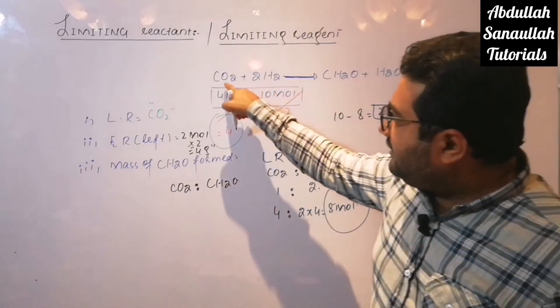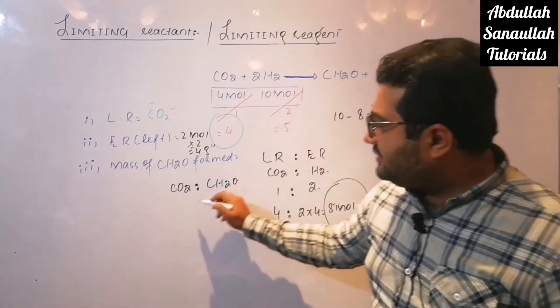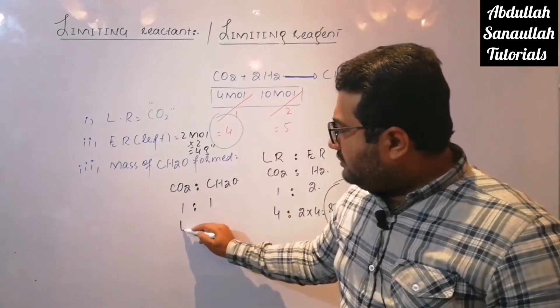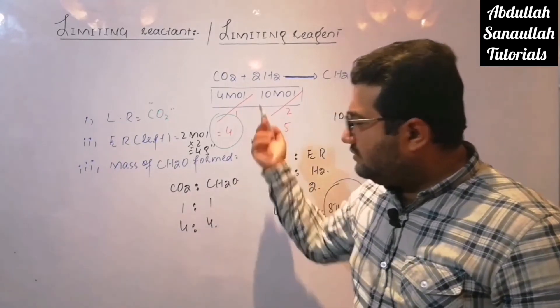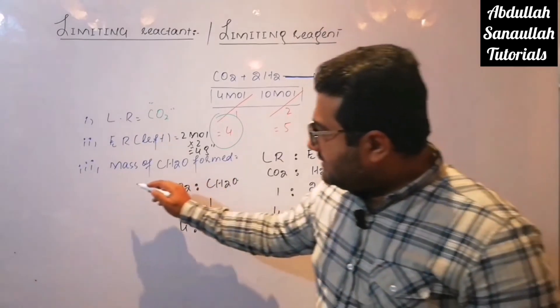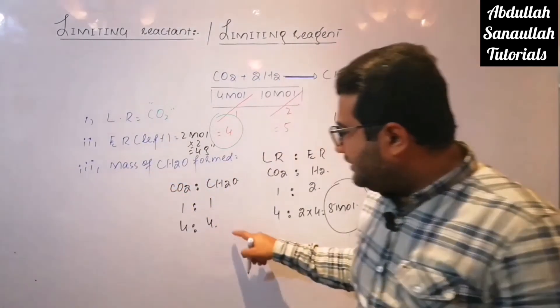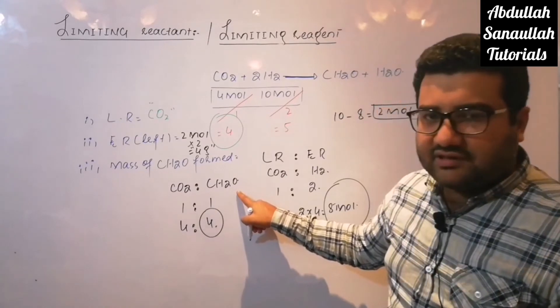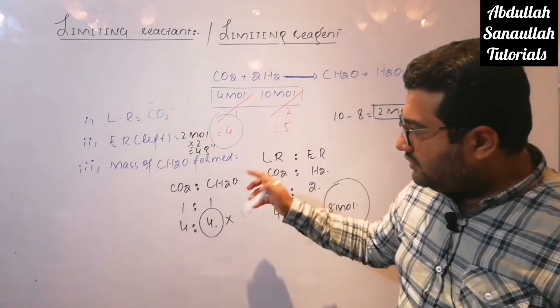According to the equation, we can see that one mole of CO2 produces one mole of CH2O and four moles will produce four moles. So the mass of CH2O produced, this is the number of moles of CH2O which are produced multiplied with its molar mass.